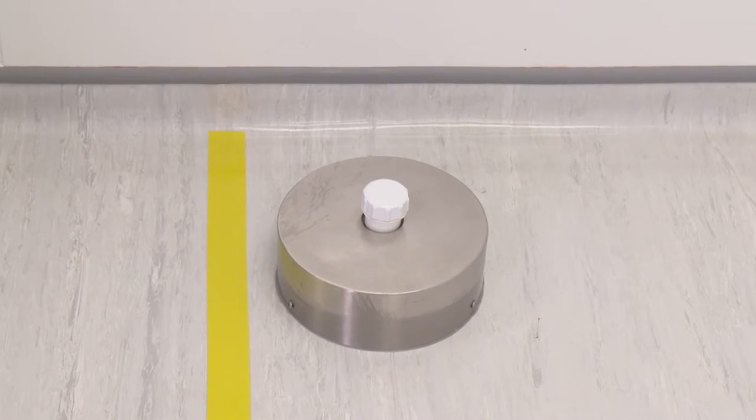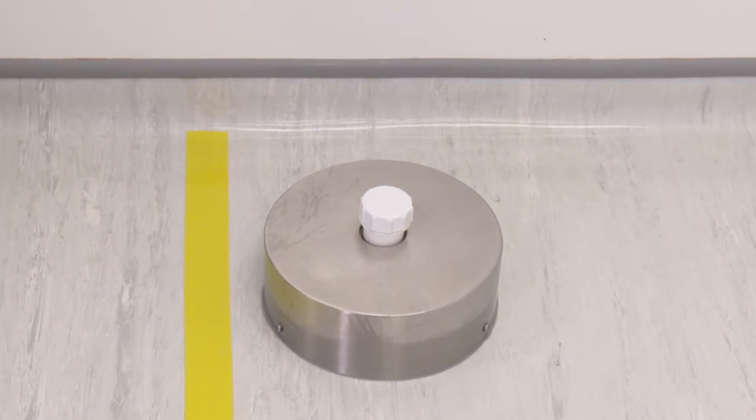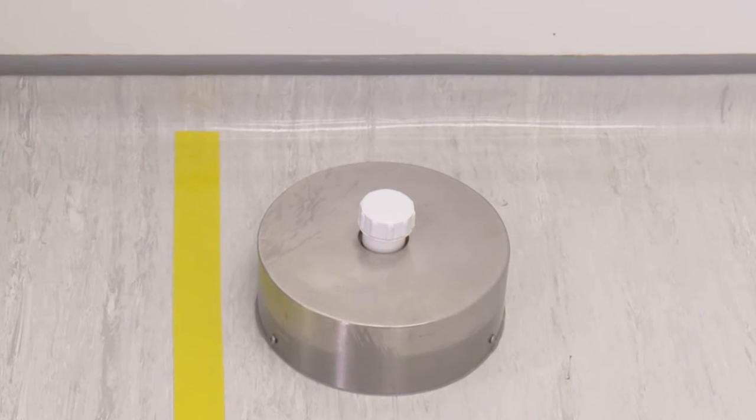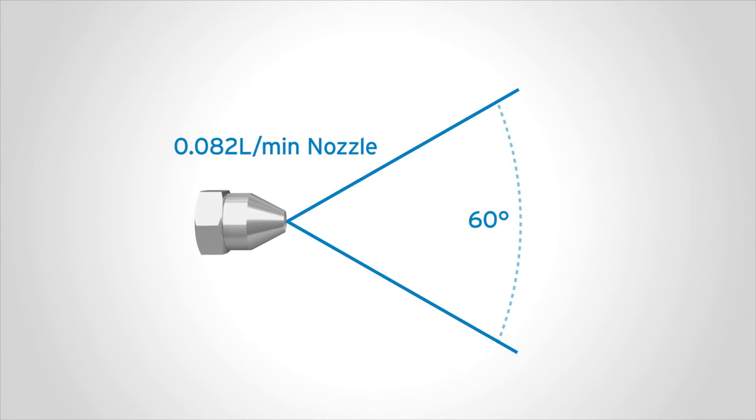Alternatively, smaller more intricate surfaces which require a slower rate of application and attention to fine surface detail are better covered using the 0.082 liter per minute nozzle with a narrower 60-degree angle of spray cone, without risking the runoff of fluid seen with excessive application.